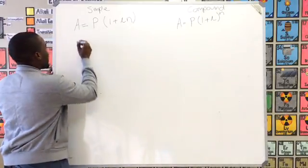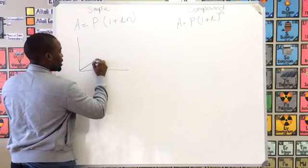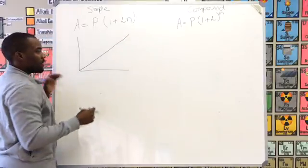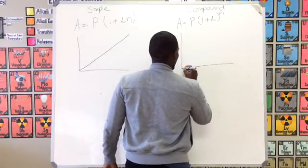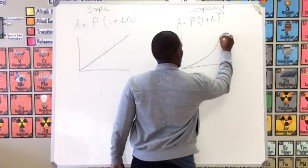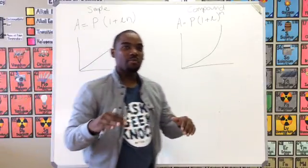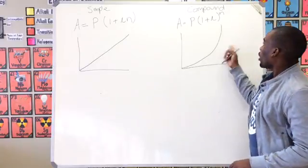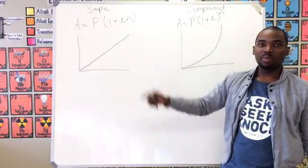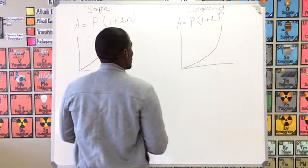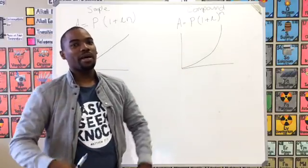Let's look at graphs of what these would look like. Simple interest is very linear — you pay the same amount every single year incrementally. But compound interest isn't linear, it's exponential — the amount of interest you pay every year increases every year. Even though these two will probably start the same way, compound interest very soon takes over and exceeds the amount of interest you earn with simple interest. That's why a lot of companies use compound interest — they just get more money back.